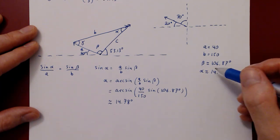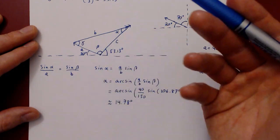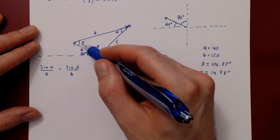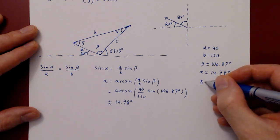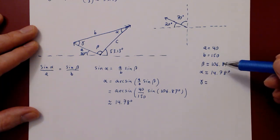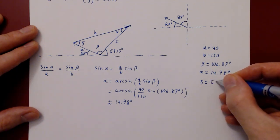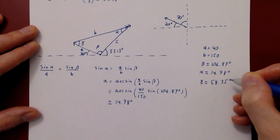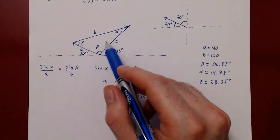We can now obtain the missing angle γ for free, since the sum of interior angles of a triangle is 180 degrees. With α and β known: γ = 180 - α - β = 180 - 14.78 - 106.87 ≈ 58.35 degrees. So now we have all three interior angles of our triangle.